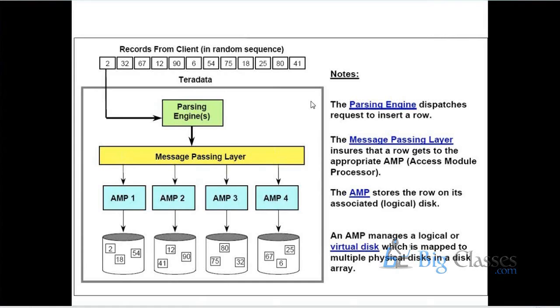Each and every node can have the same number of configuration, or the processes are configurable. You can configure according to your requirement. There are limitations we will be looking into, but those are configurable parameters. How many number of parsing engines you want to have in a node, how many number of access module processors you want to have in a node, those are configurable parameters.